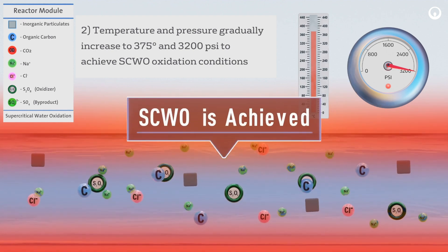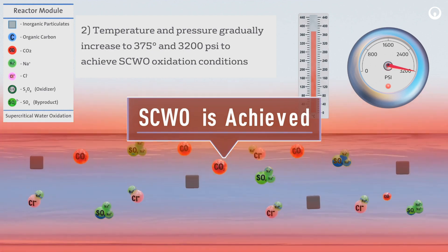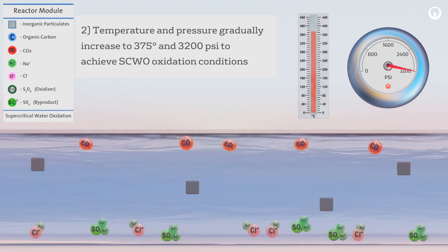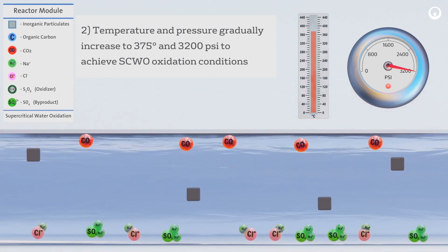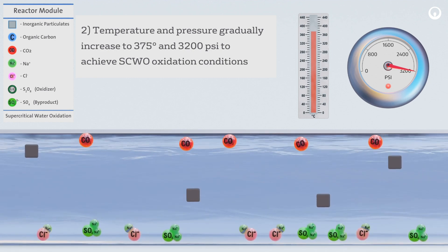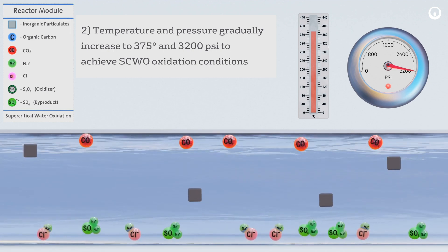With the increased heat and pressure, the organic carbon is oxidized to CO2 through the addition of sodium persulfate, an oxidizer. As an added benefit, inorganic salts are no longer soluble at conditions and therefore do not interfere with the oxidation reaction.